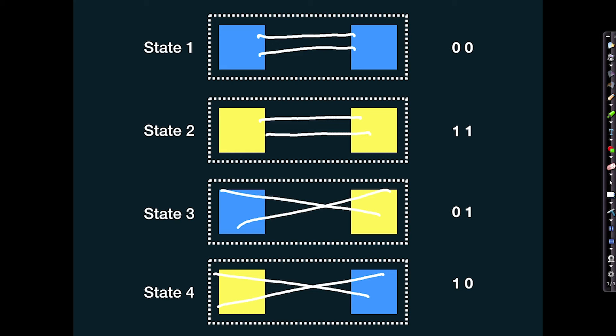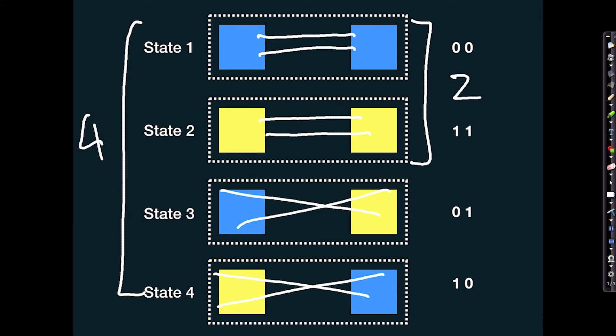We've reduced the number of states the system can occupy from four states down to two states. We've been able to sculpt, if you like, the amount of information the system can generate by forming connections between smaller, simpler systems. When we start thinking about the structure of the brain and how it generates patterns of information from large assemblies of neurons, this idea of constraining information by forming connections will become clear. The systems in that case will be small networks of neurons called cortical columns — but that's for a future unit.